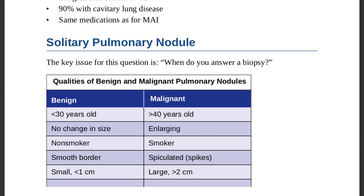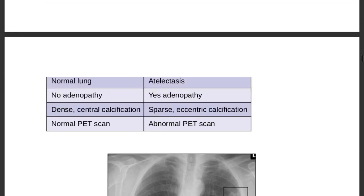Benign nodules show no change in size, while malignant nodules continuously enlarge. Malignancy is associated with smoking; benign nodules tend to present in non-smokers. Benign lesions have smooth borders, but malignant lesions have spiculated borders. Benign lesions are less than one centimeter; malignant lesions are more than two centimeters.